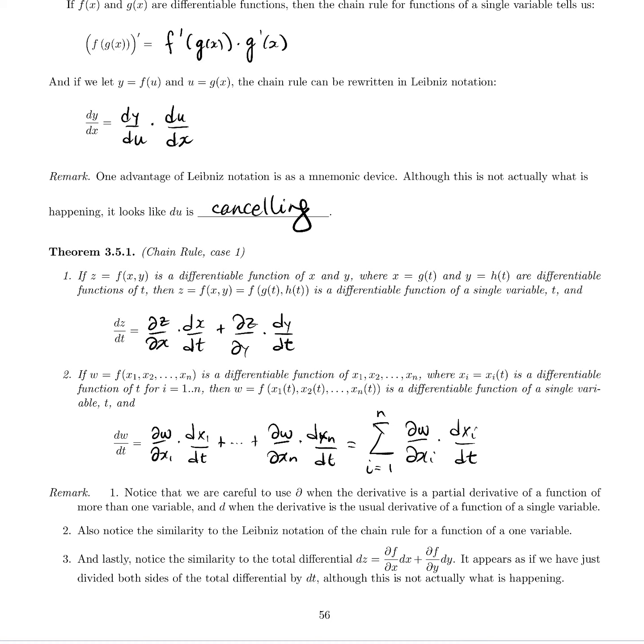Also notice the similarity to Leibniz notation for a single variable. It looks like the x terms and the y terms are canceling out, and if those canceled out, we're left with two versions that, though not quite correct, it's a mixture of del's and d's, lets us use this as a mnemonic device, a little memory aid as to how the chain rule is supposed to go.